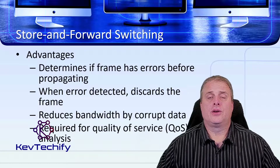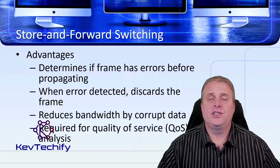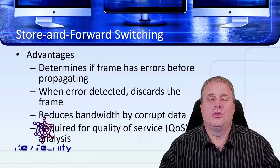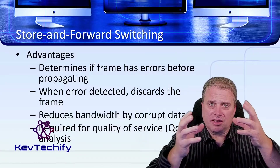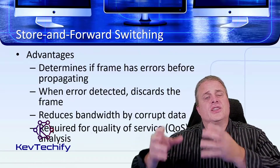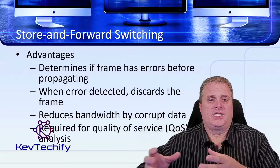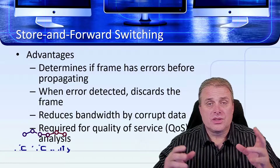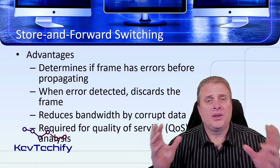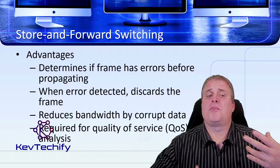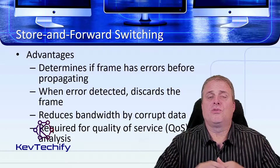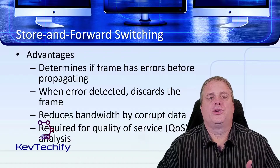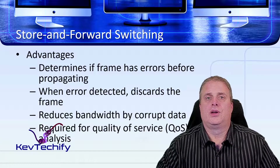With the store and forward method, there are several advantages. The first advantage is that store and forward determines if there's an error with the frame before it propagates through the network. It uses the cyclic redundancy check — the switch calculates and compares it to the CRC attached in the trailer. If there's an error, the switch discards that frame, reducing bandwidth usage by eliminating corrupted data. This store and forward method is also required for quality of service analysis — for streaming technologies and voice over IP, you need store and forward switching enabled.